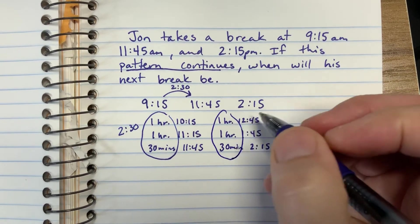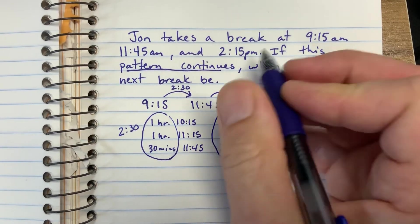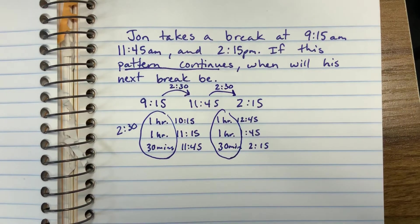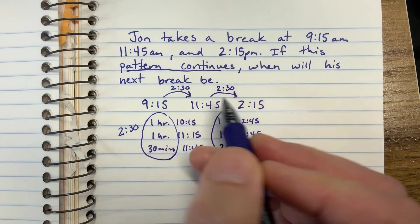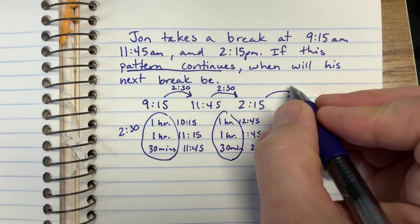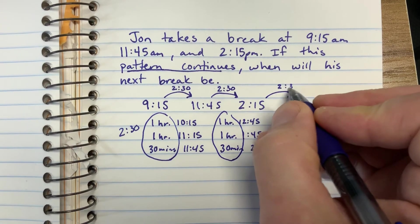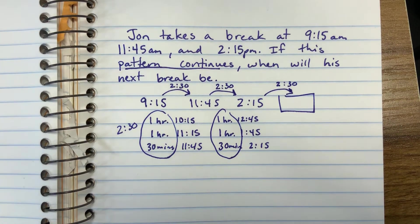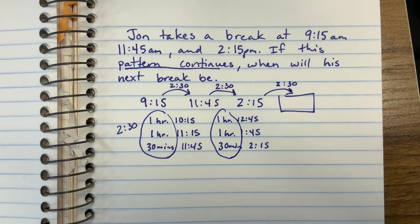And if you notice again, we have two hours and 30 minutes between 11:45 and 2:15. So there's our pattern. He takes a break every two hours and 35 minutes. So from here to here, we're going to add two hours and 30 minutes, and that will be when his next break is. All right, so good luck with that. We'll see you on the next.